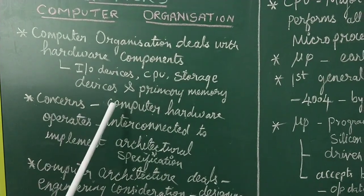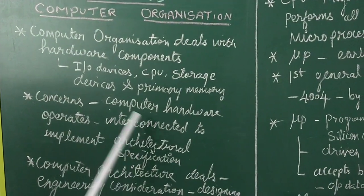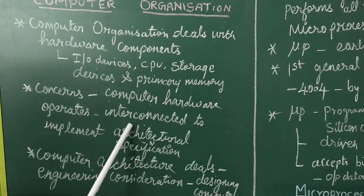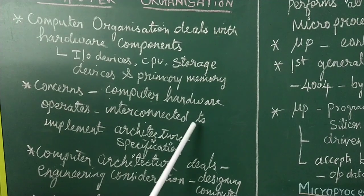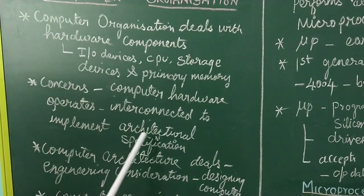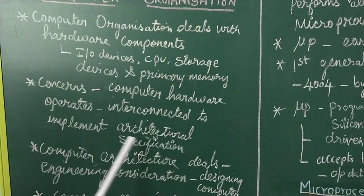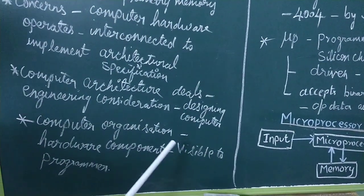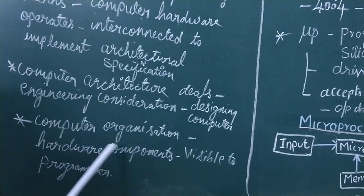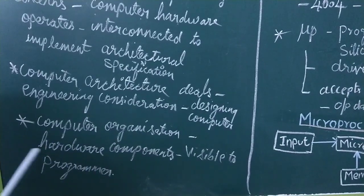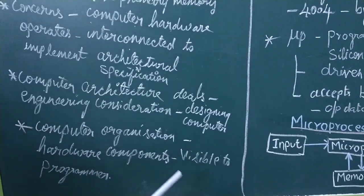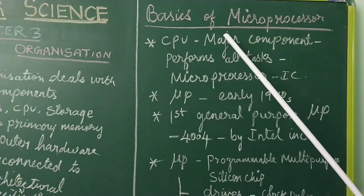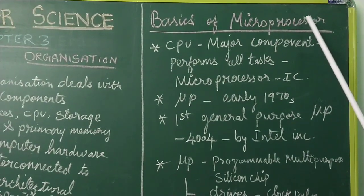Computer organization is concerned with how the computer hardware operates — how the hardware components are going to be connected to implement architecture specifications. Computer architecture deals with engineering considerations for designing the computer. In general, computer organization deals with the hardware components which are usable to the computer programmers.